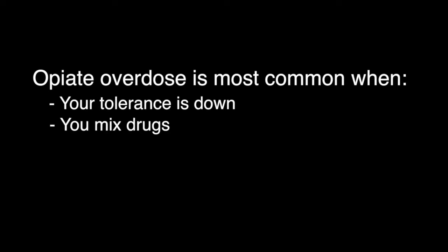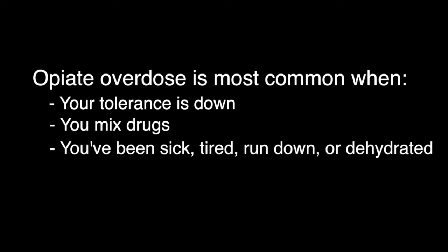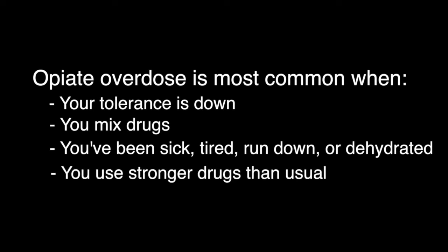Prevent Overdose: Opiate overdose is most common when your tolerance is down after a break from using, when you mix drugs — especially combinations of downers like heroin, methadone, other opiates, alcohol, and benzodiazepines — when you've been sick, tired, run down, or dehydrated, or when you use stronger drugs than usual. To prevent overdose: go slow after breaks or if you're using something stronger, be careful when mixing drugs, and take care of yourself — eat, sleep, and drink water.